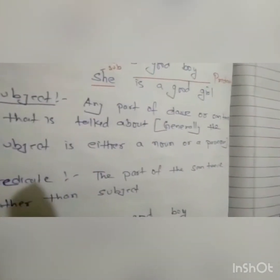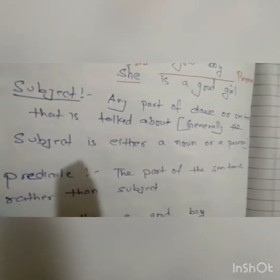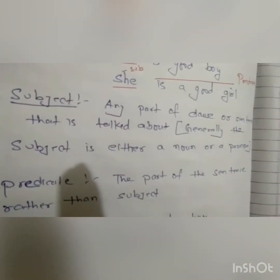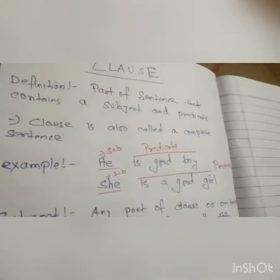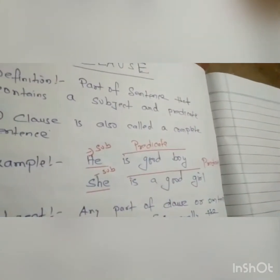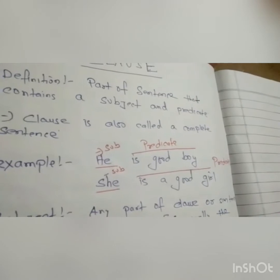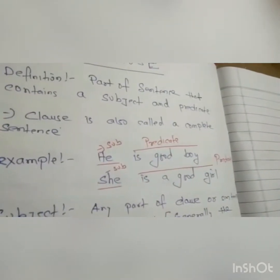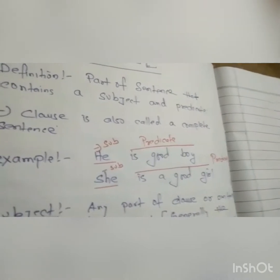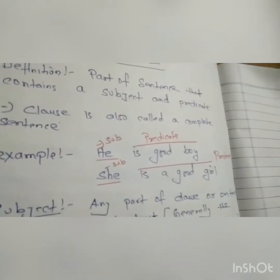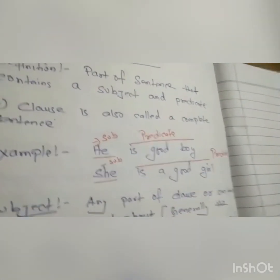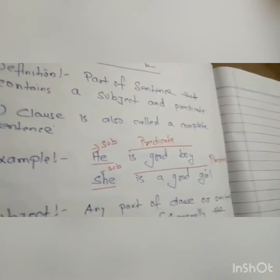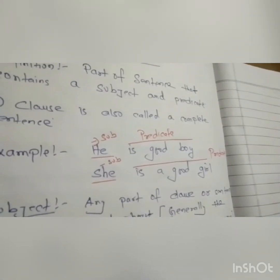Next is predicate. Predicate is the part of the sentence other than the subject. Any part of the sentence apart from the subject in the sentence or a clause is known as predicate. See the example: 'He is a good boy' and 'She is a good girl.' In the first example, 'he' is the subject as it is a pronoun. In the second example, 'she' is the subject. These two words are the words that are being talked about — the whole sentence is based on the subject. And the rest — 'is a good boy' and 'is a good girl' — is the predicate. The part of the sentence apart from the subject is known as the predicate.